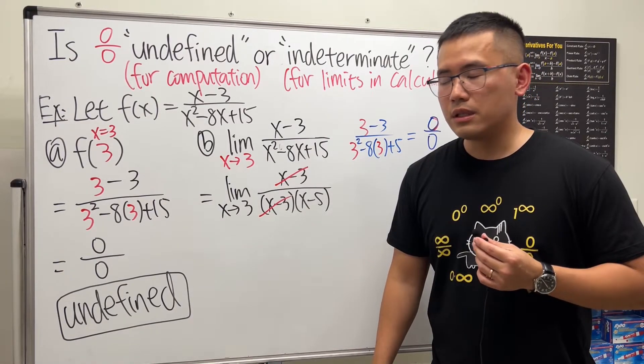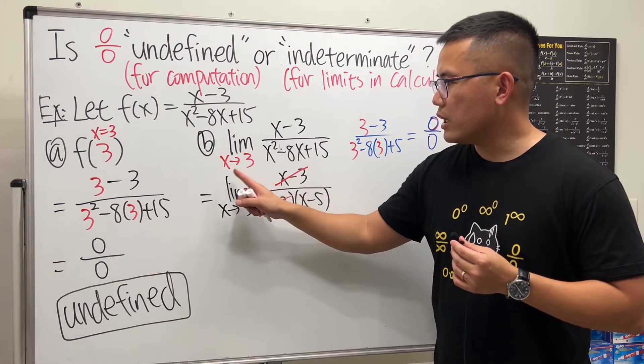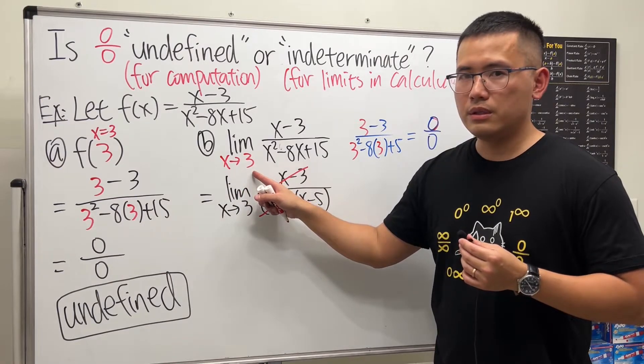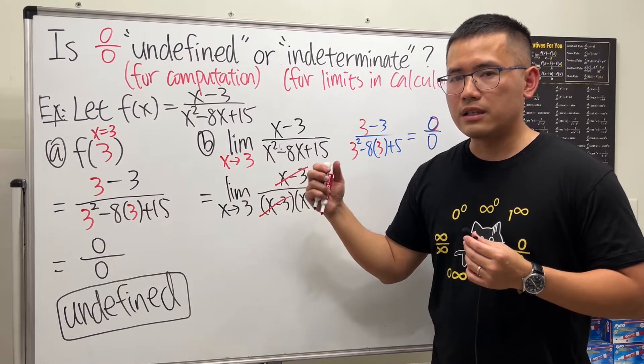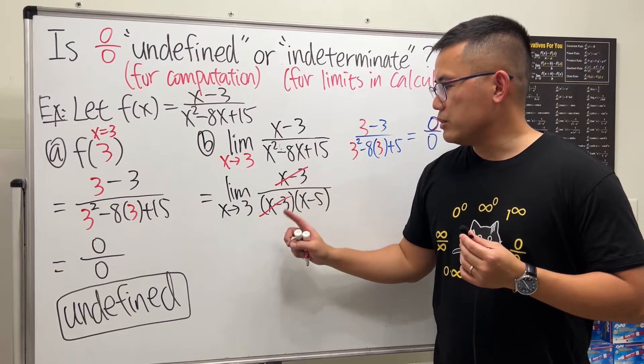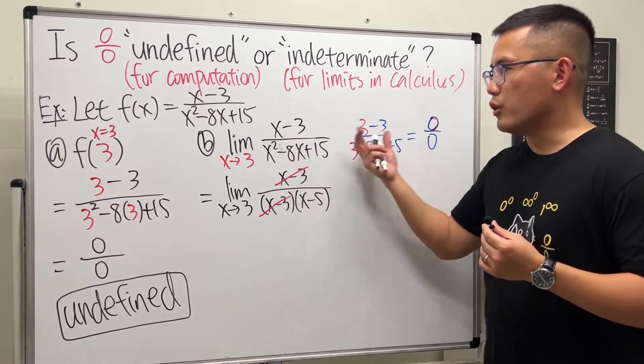In fact, I will tell you a secret: if you have a limit question when x is approaching 3, then you can expect to cancel the factor x minus 3 if it was a 0 over 0 case earlier.